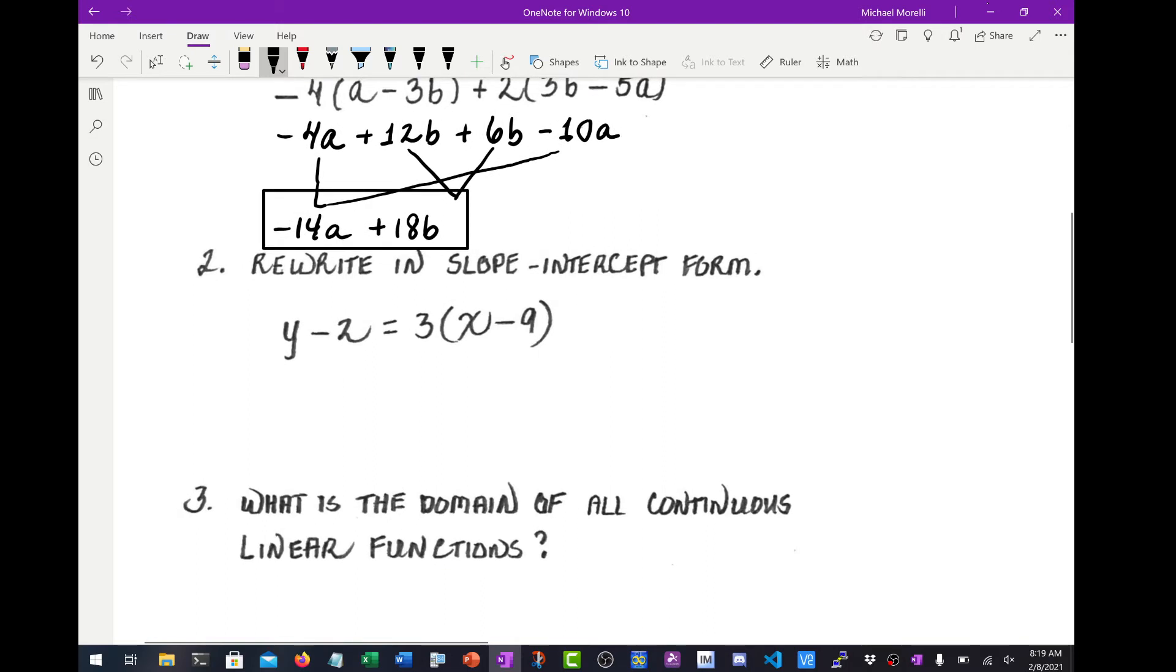Number 2, rewrite in slope intercept form. So right now it's in point slope form. The first thing to do is to distribute the slope, which would be 3. So the left side doesn't change. It's Y minus 2 equals 3X minus 27. Add 2 to both sides. Cancels the 2's on the left, and now Y equals 3X minus 25. That's the answer to number 2.